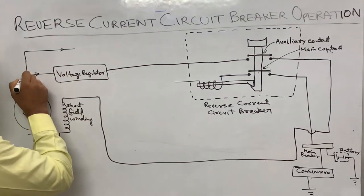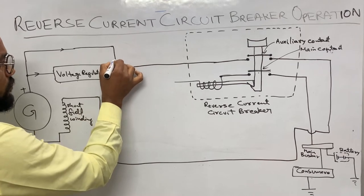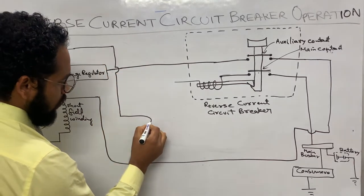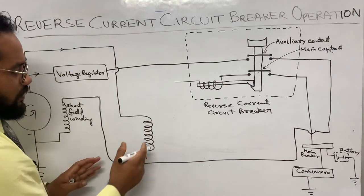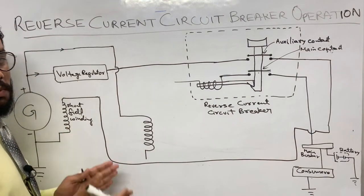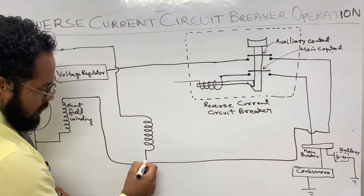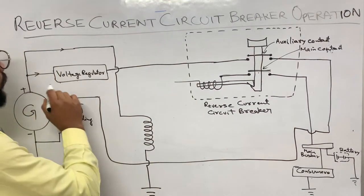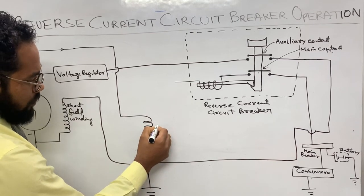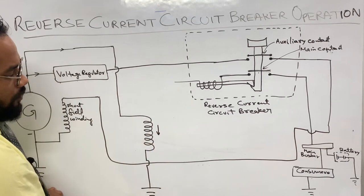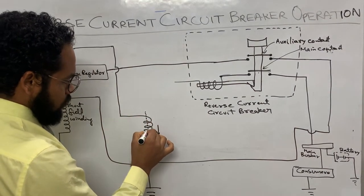The output is also taken and given to the reverse current cutout relay. This is the voltage coil of the reverse current cutout relay. In the reverse current cutout there are two coils: one is the voltage coil and the other is the current coil. The voltage coil has many turns of thin copper wire and gets a grounding path. When the output is given to this voltage coil, the coil gets energized and produces a magnetic effect, causing a contact to close.